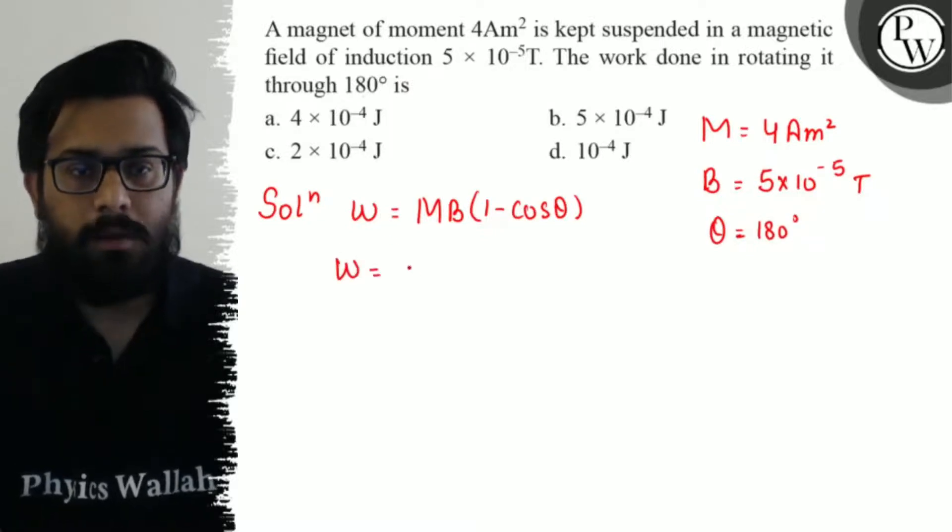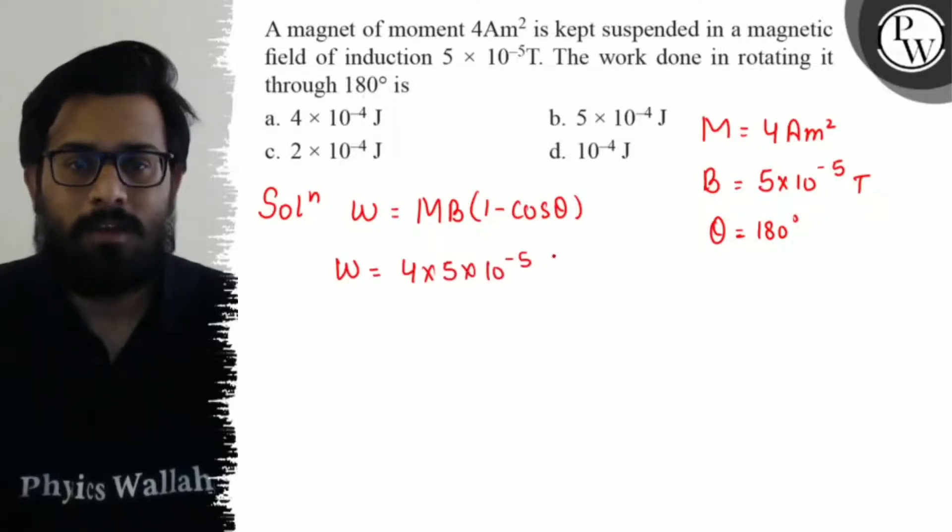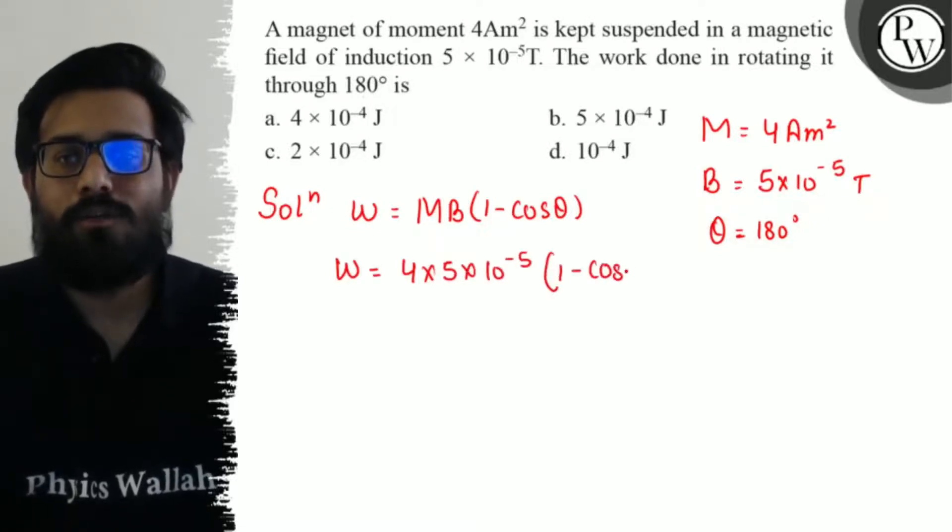So the work done comes out to be 4 × 5 × 10⁻⁵ × (1 - cos 180°).